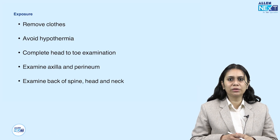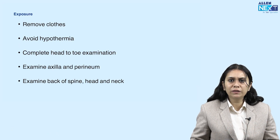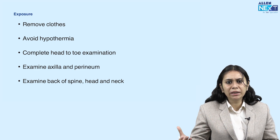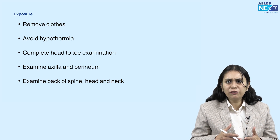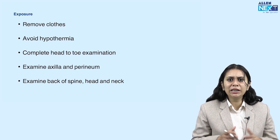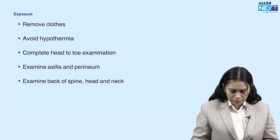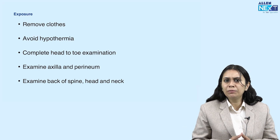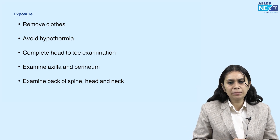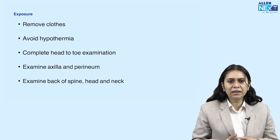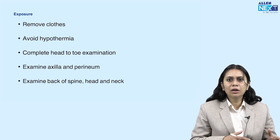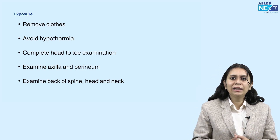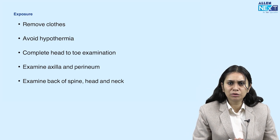Finally, E — exposure. We remove all the clothes of the patient from head to toe to look for any bleeding or injury. The removal of clothes should be done carefully to avoid hypothermia. We perform a complete head-to-toe examination, including the axilla and perineum for any hemorrhage, and examine the back, spine, and head and neck of the patient. By exposure, we examine the patient in totality to find any clue as to why the patient has landed up in this emergency situation.